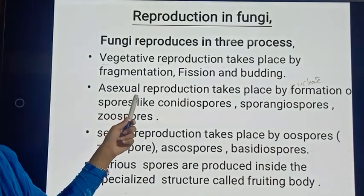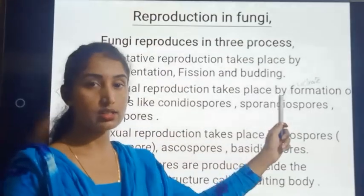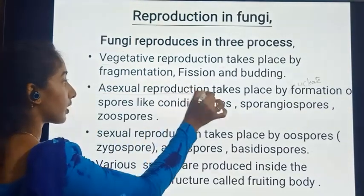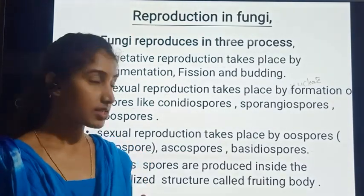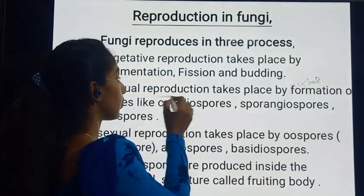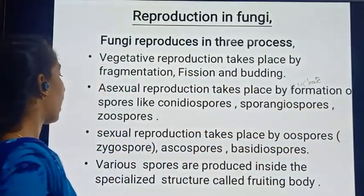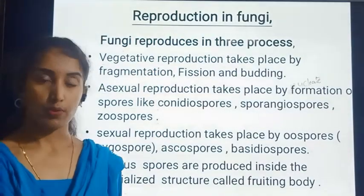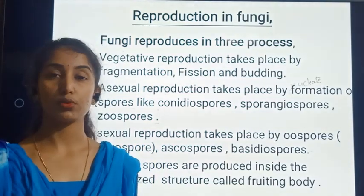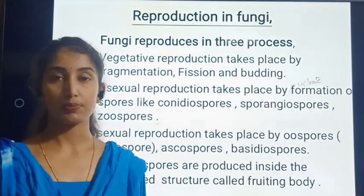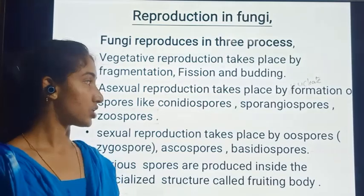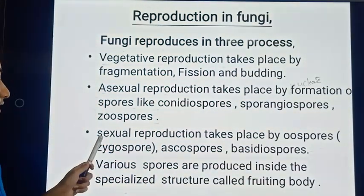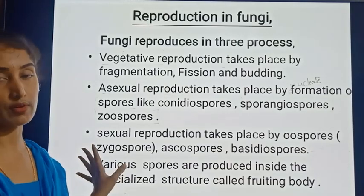Asexual reproduction takes place by the formation of spores — this is very important. Three different types of spores are produced by fungi: conidiospores, sporangiospores, and zoospores.